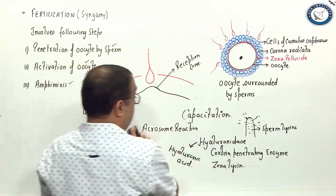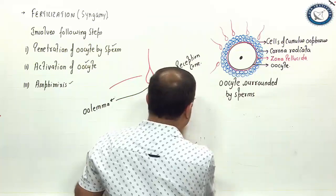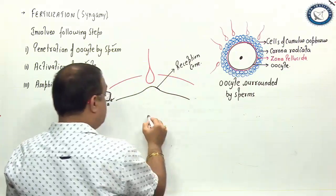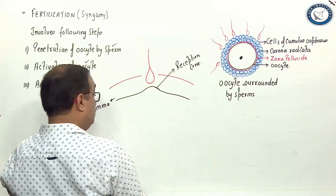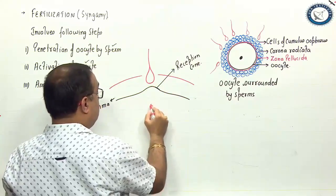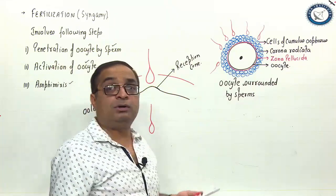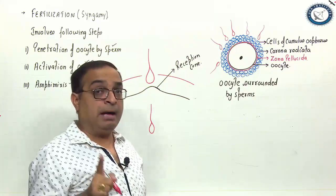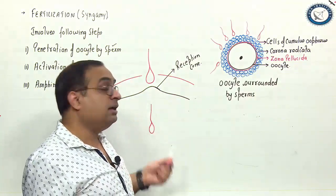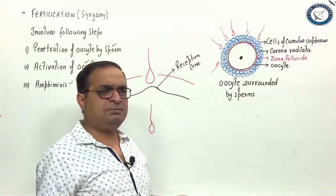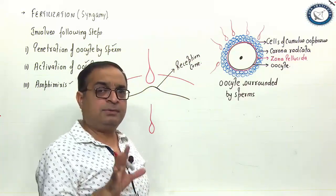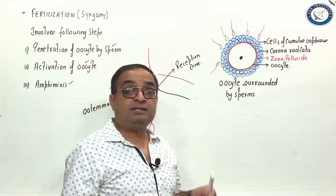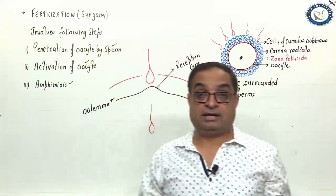Please remember, in mammals including humans, entire sperm enters into the oocyte. In certain organisms like echinoderms, sea urchin, only head and the middle piece enters. But in mammals including humans, entire sperm enters into the oocyte. Sometimes the tail may be left out, otherwise the entire sperm enters. Once a sperm has entered into the oocyte, then what other changes occur as a part of activation process?